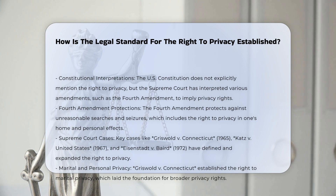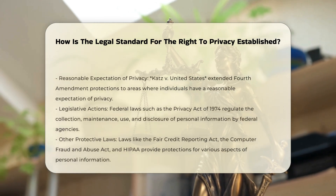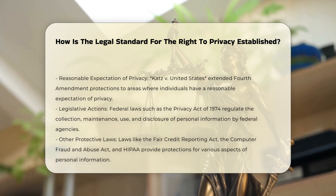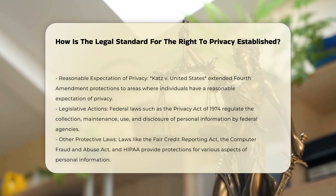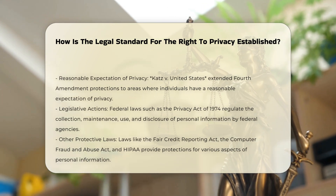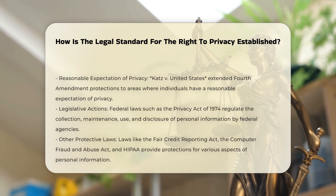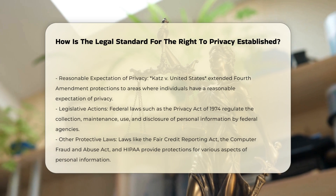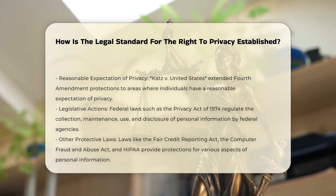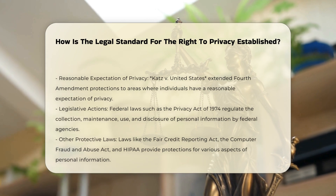Court decisions: Key court cases have played a significant role in defining the right to privacy. The landmark case Griswold v. Connecticut (1965) established the right to marital privacy, which laid the foundation for broader privacy rights. Other important cases include Katz v. United States (1967), which extended Fourth Amendment protections to areas where individuals have a reasonable expectation of privacy, and Eisenstadt v. Baird (1972), which applied the right to privacy to unmarried individuals.